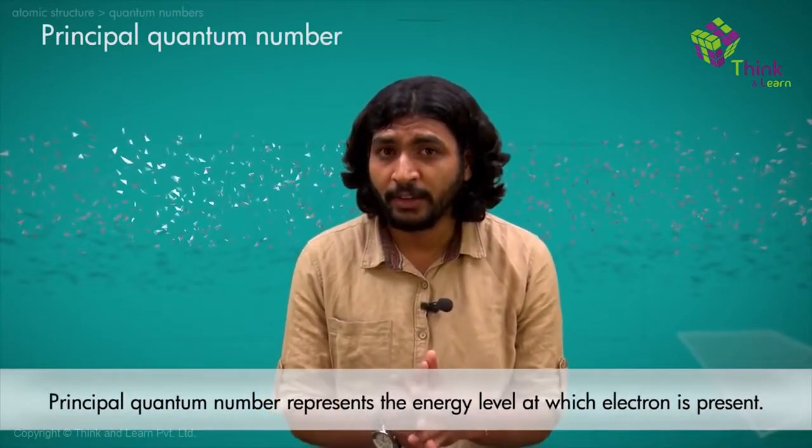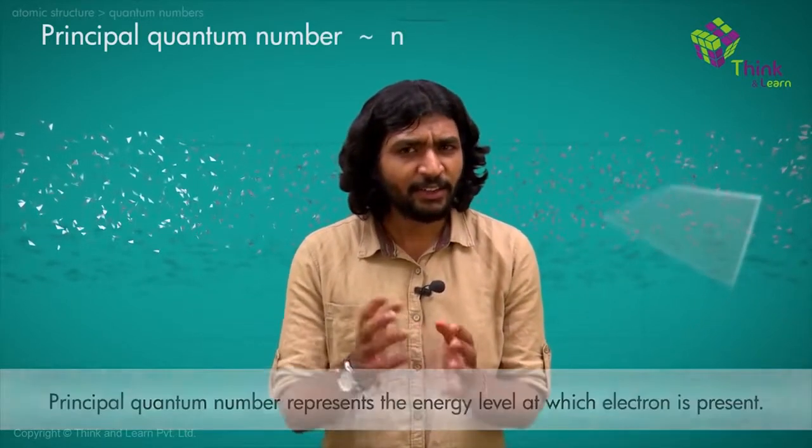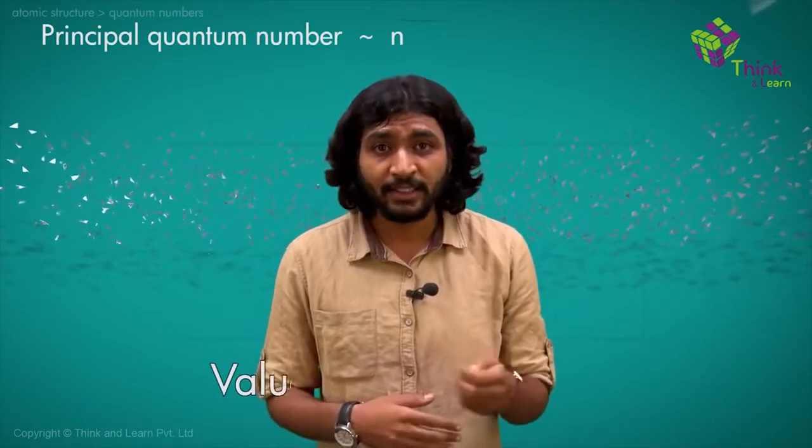Now let's talk about the principal quantum number. The principal quantum number gives us the energy level at which the electron is present, and it is denoted by the letter N. The electron cannot exist around the nucleus without energy, because energy levels are quantized — it needs some minimum energy to stay there. The value of N for an electron in the lowest energy state is 1, and as we progress to higher energy levels, N increases: 1, 2, 3, 4, 5, and so on.